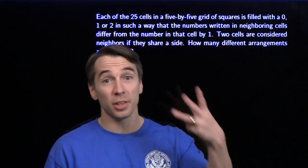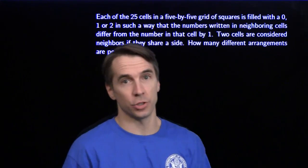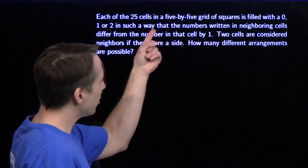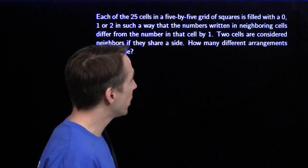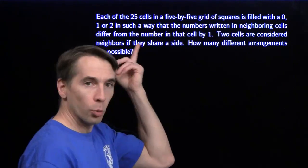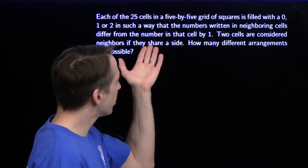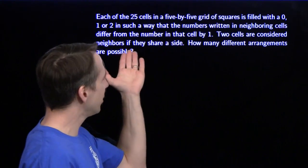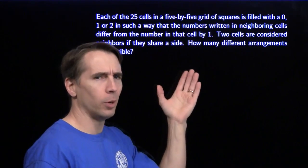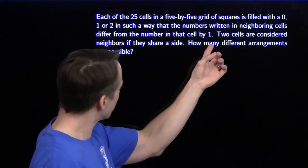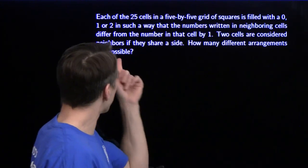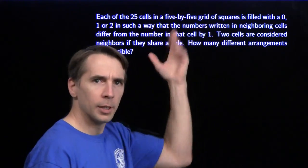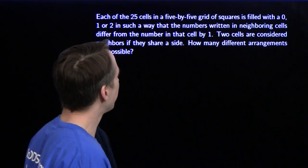We have two counting problems this month and three counting strategies. We have 25 cells in a five by five grid of squares. Each one is filled with a zero, one, or two in such a way that the numbers written in neighboring cells differ from the number in that cell by one. Two cells are considered neighbors if they share a side. We want to count how many different ways we can fill up these five by five grids.